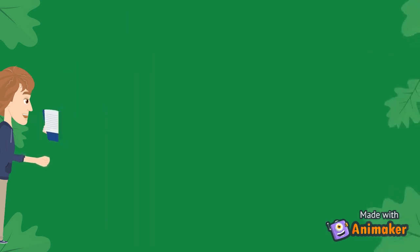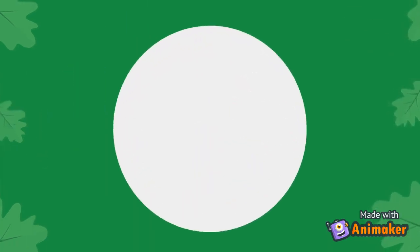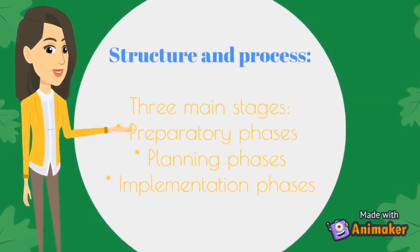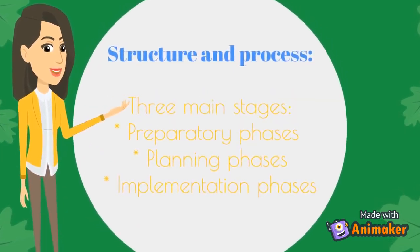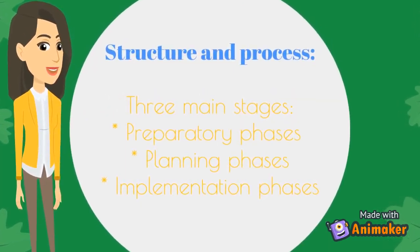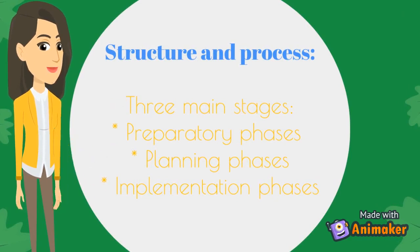There are three main stages in the joint management structure and process. The first stage is the preparatory phase, the second stage is the planning phase, and the third stage is the implementation phase.